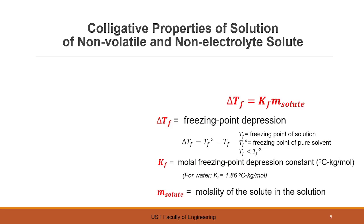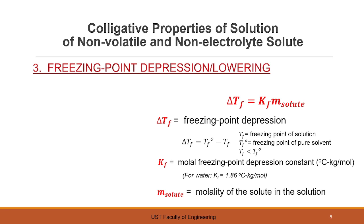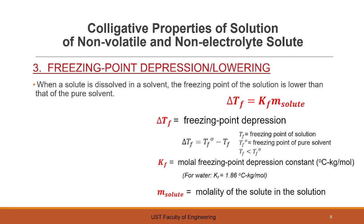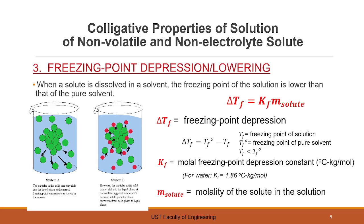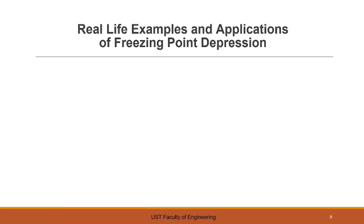Another colligative property is freezing point depression, or lowering. When a solute is dissolved in a solvent, the freezing point of the solution is lower than that of the pure solvent. We are looking for the depression or decrease in the freezing point, which is also related to the molal freezing point depression constant and the molality of the solute in the solution. The solute particles cannot immediately shift into the solid phase at the normal freezing point temperature because they block movement from the liquid phase to the solid phase.